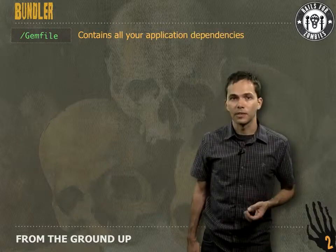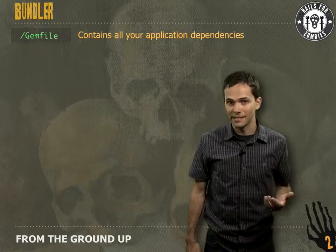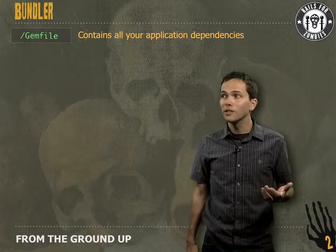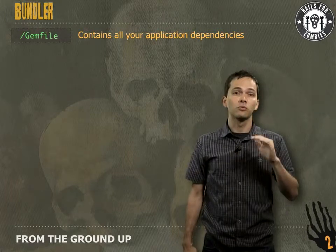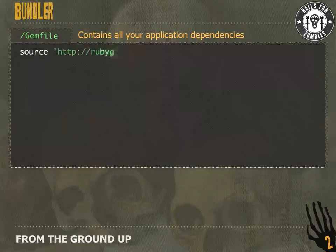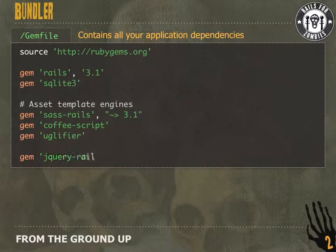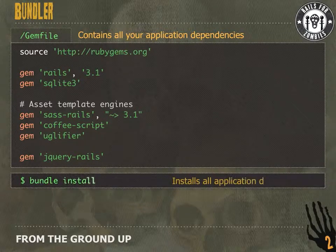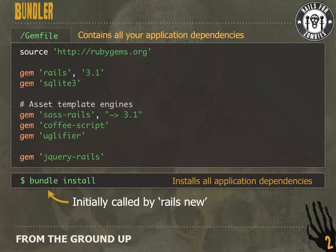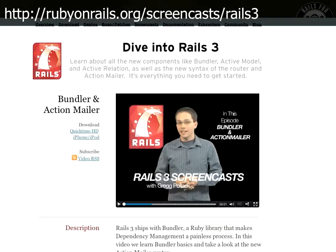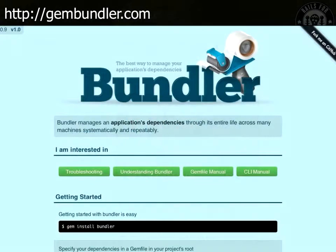When we created our Rails app, it ran `bundle install` and installed a bunch of external dependencies. How did it know which dependencies to install? That comes from the Gemfile at the root of our directory. Here you can see a listing of all of our Rails app's external dependencies. Whenever we want to make sure we have these installed or want to install new ones, we run `bundle install`. For more information on Bundler, head over to rubyonrails.org in the screencast section, or go straight to gembundler.com.